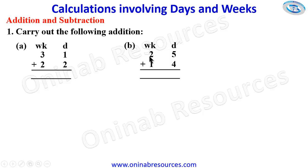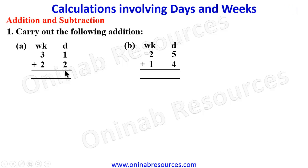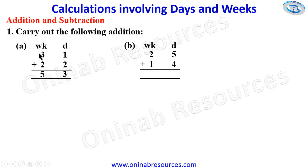And for B: 2 weeks 5 days to be added to 1 week 4 days. We start the addition from days. So 1 plus 2 gives 3 days. And 3 weeks plus 2 weeks gives 5 weeks. Therefore, 3 weeks 3 days.